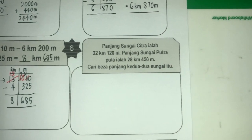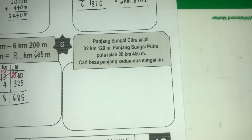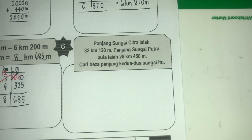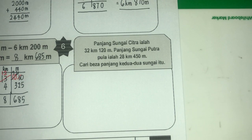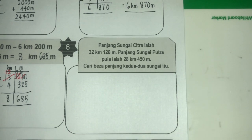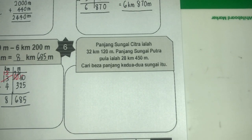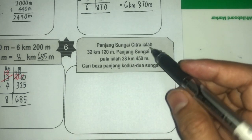Panjang sungai Citra ialah 32 kilometer 120 meter. Panjang sungai Putra pula ialah 28 kilometer 450 meter. Cari beza panjang kedua-dua sungai itu. Beza ialah operasi tolak. Kita ambil nombor yang besar — sungai paling panjang tolak sungai paling pendek. Sungai Citra panjang, sungai Putra pendek, jadi Citra tolak sungai Putra.